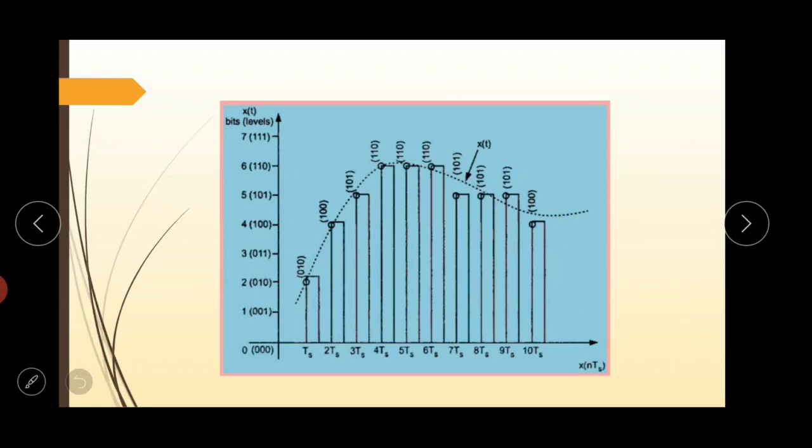This signal is sampled by flat top sampling at interval TS, 2TS, 3TS, 4TS like this up to NTS. And the top of the samples are flat, because of that we mention it as flat top sampling. Then the sampling frequency is selected higher than Nyquist rate.